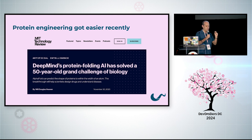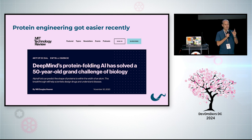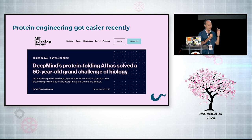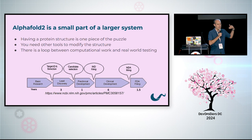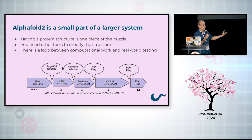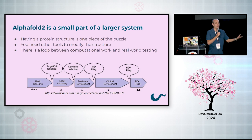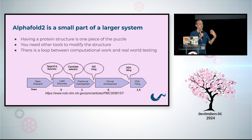Knowing what a protein looks like is just a small piece of the puzzle — one piece of a very long puzzle. You know your protein structure, but you need other tools to actually modify that structure, because you're doing protein engineering, not just protein structure prediction.